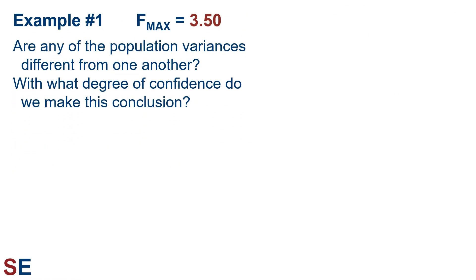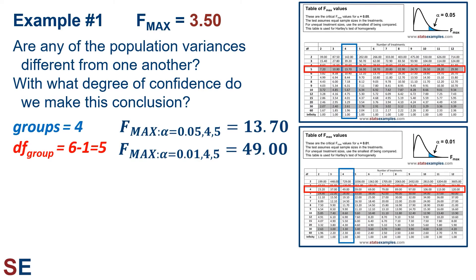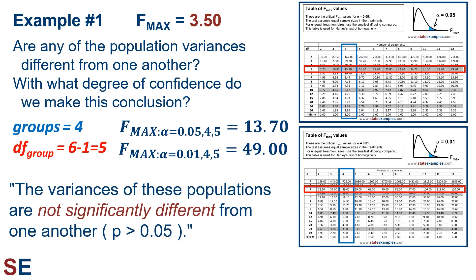Now we need to compare our calculated Fmax value to the appropriate critical values. We have four groups and each group has six values, which gives us 6 minus 1 equals 5 degrees of freedom for each group. Looking at the Fmax critical values table, we look at the column for four groups and the row for 5 degrees of freedom. The critical values are 13.7 for an alpha of 0.05 and 49 for an alpha of 0.01. Our Fmax value of 3.5 is smaller than 13.7, so the p-value is more than 0.05 — a non-significant result. We can therefore say the variances of these populations are not significantly different from one another (p > 0.05), and they can be treated as equal for techniques like the ANOVA.